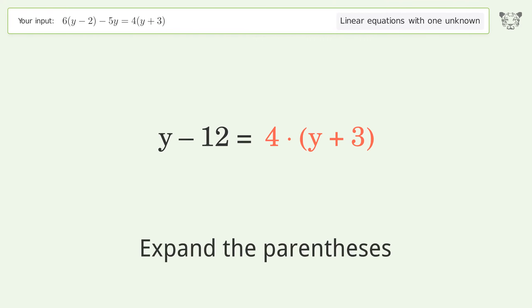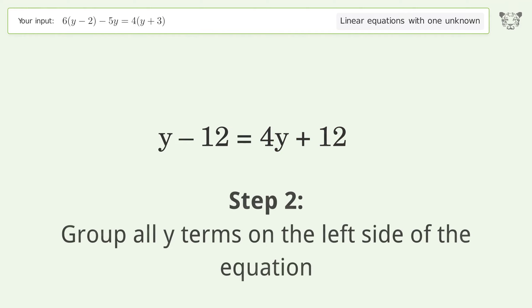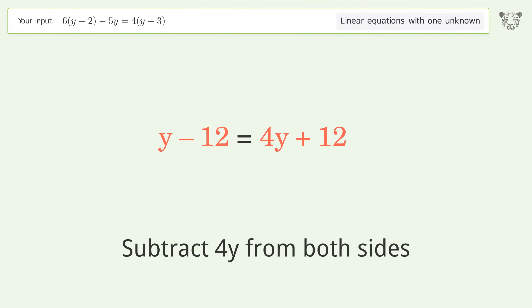Expand the parentheses. Simplify the arithmetic. Group all y terms on the left side of the equation. Subtract 4y from both sides.